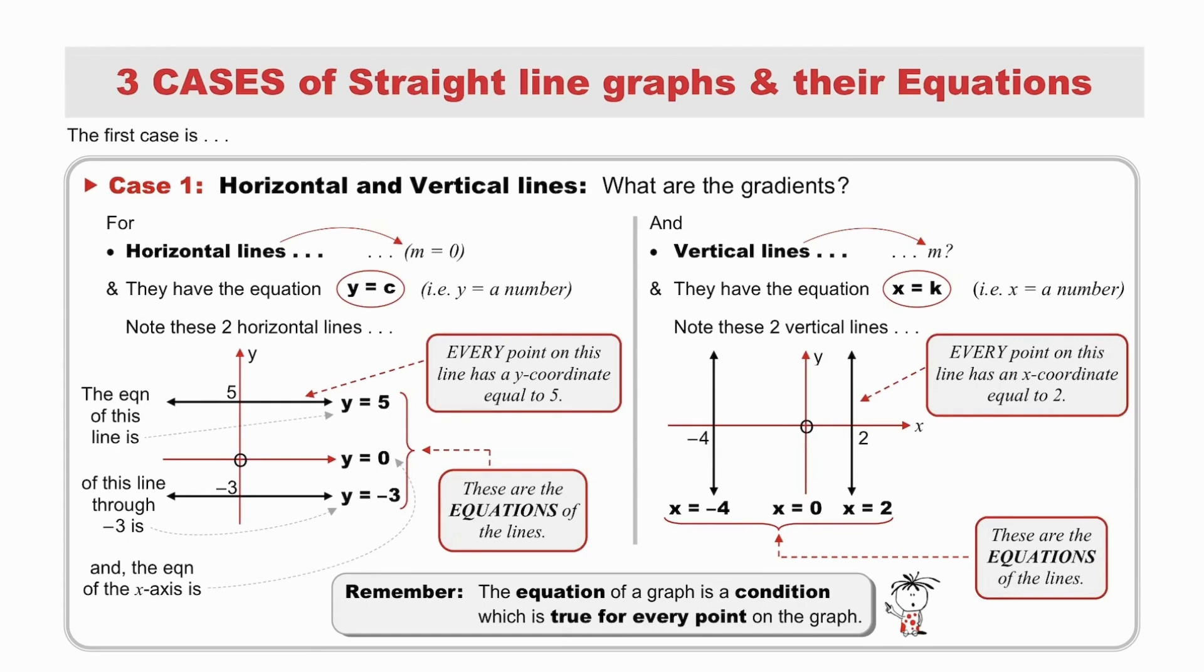And, vertical lines. The gradient of vertical lines is undefined, and they have the equation x equals k, i.e. x equals a number. Remember, note these vertical lines below. Every point on this vertical line has an x-coordinate of 2, and therefore the equation is x equal to 2. Similarly, this vertical line has the equation x equals minus 4, and the y-axis has the equation x equals 0. These are the equations of the vertical lines.